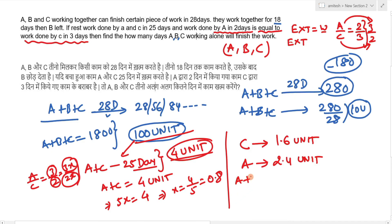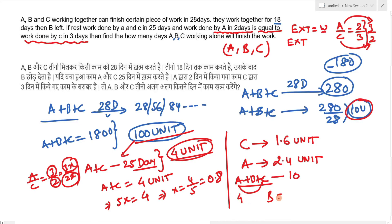A+B+C together do 10 units per day, and A+C together do 4 units per day. Therefore B's efficiency is 10 minus 4 = 6 units per day.